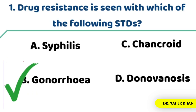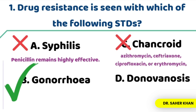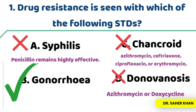So the correct answer here is gonorrhea. Now let's analyze the other options. For syphilis, penicillin is the drug of choice. For chancroid, they are susceptible to azithromycin and erythromycin. For donovenosis, they are susceptible to doxycycline and azithromycin.